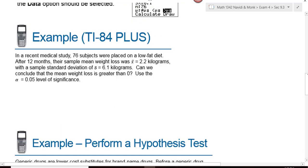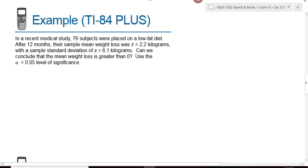Here is an example problem. In a recent medical study, 76 subjects were placed on a low-fat diet. After 12 months, the sample mean weight loss was x-bar equals 2.2 kilograms with the sample standard deviation of 6.1 kilograms. Can we conclude that the mean weight loss is greater than zero? This is what we look at to help us write our null and our alternative hypotheses.